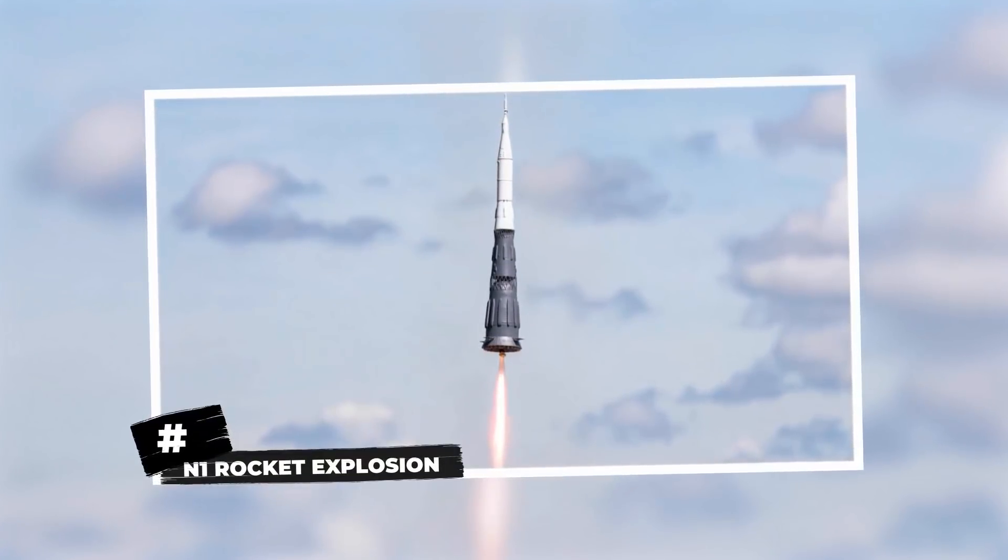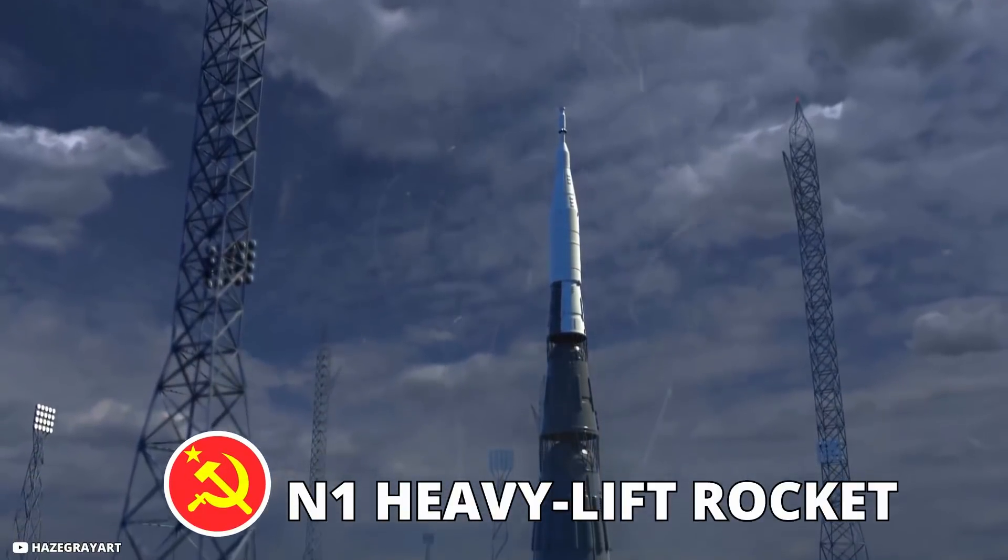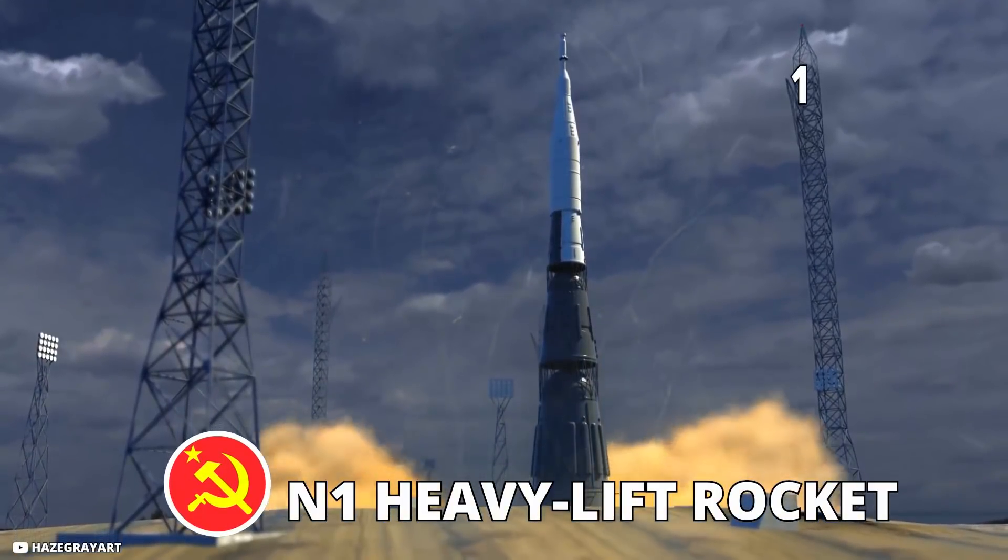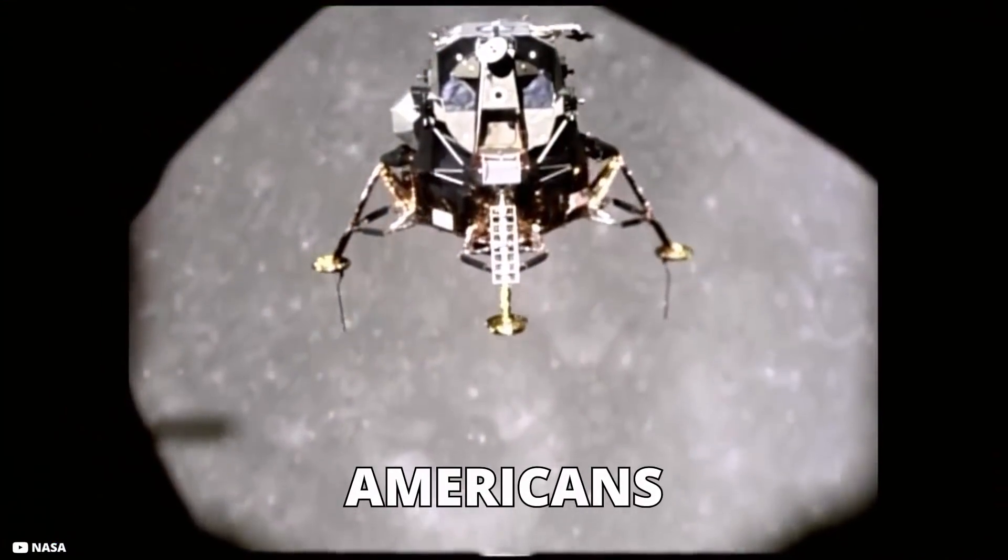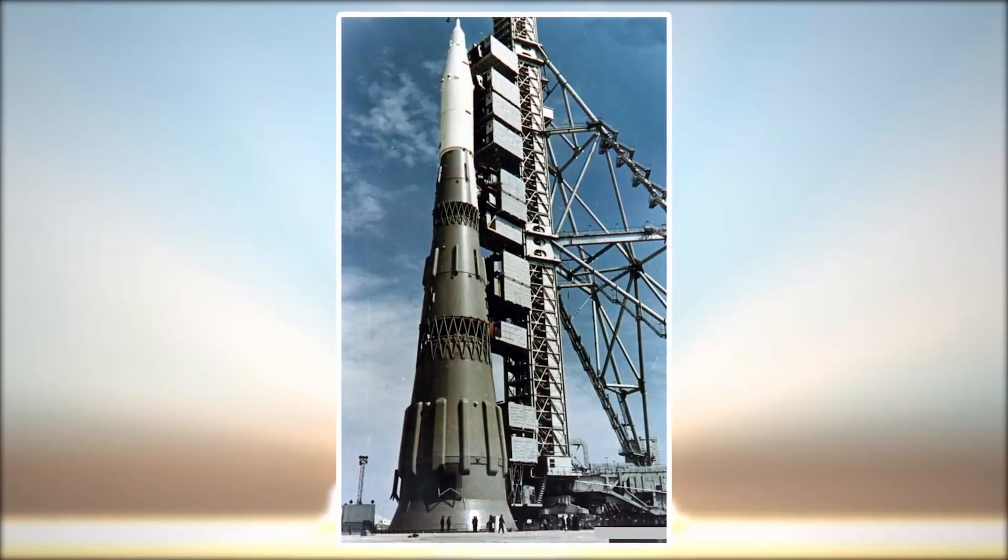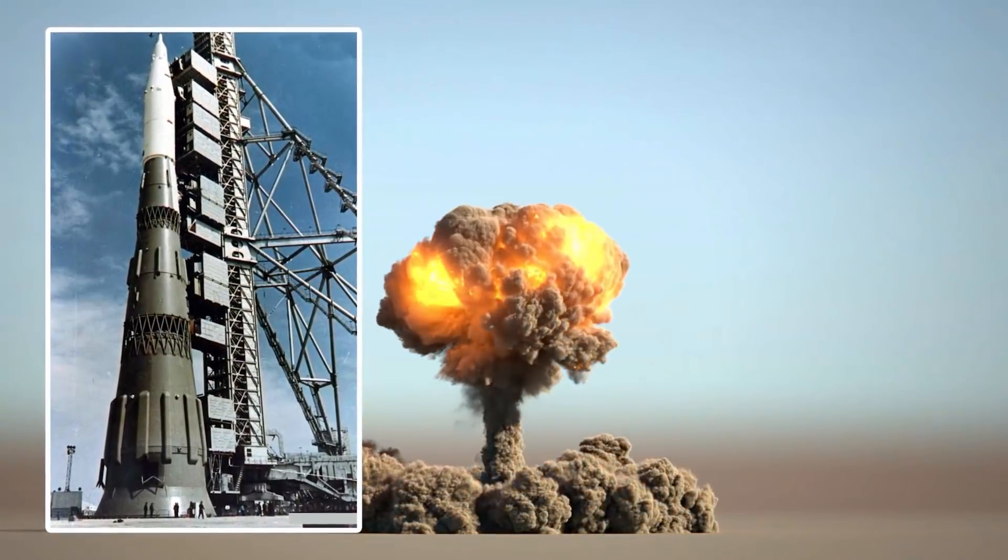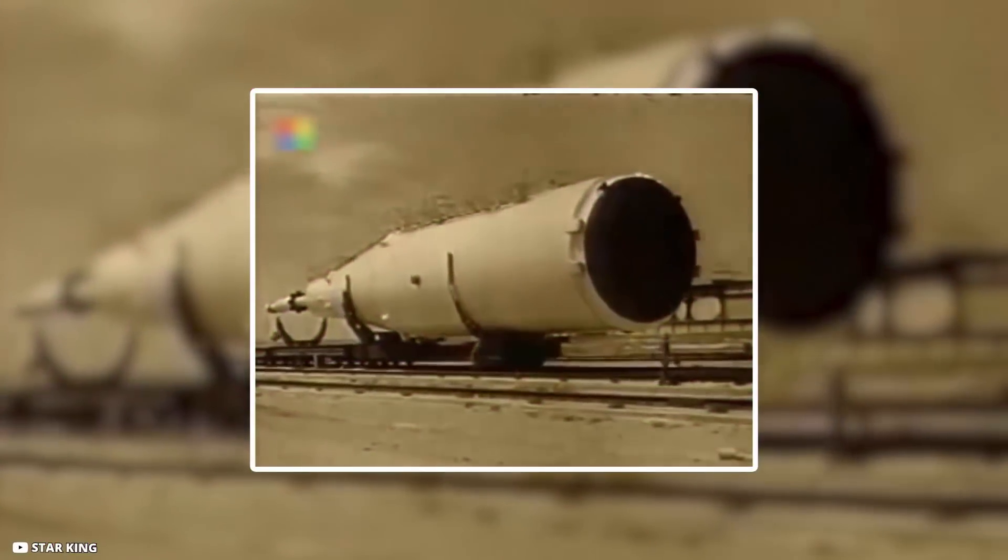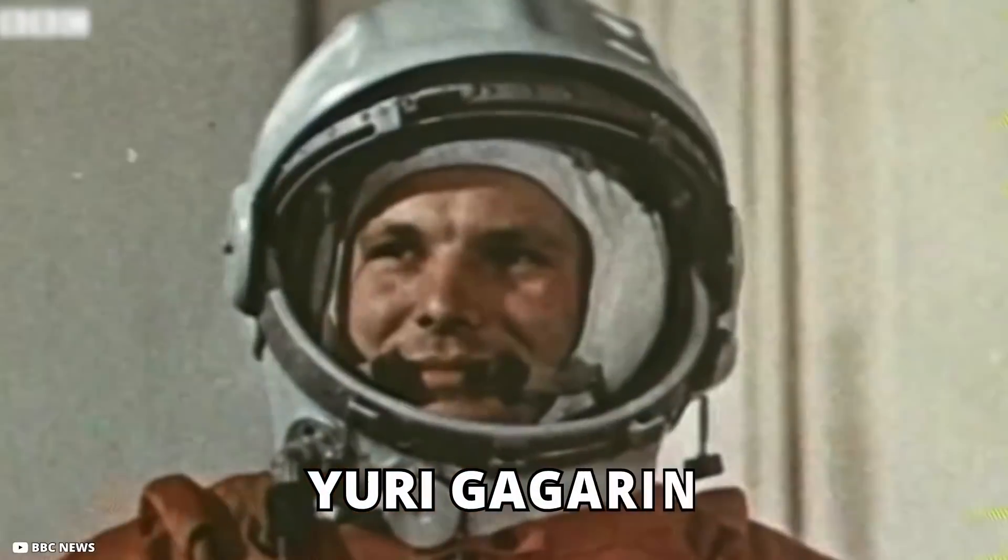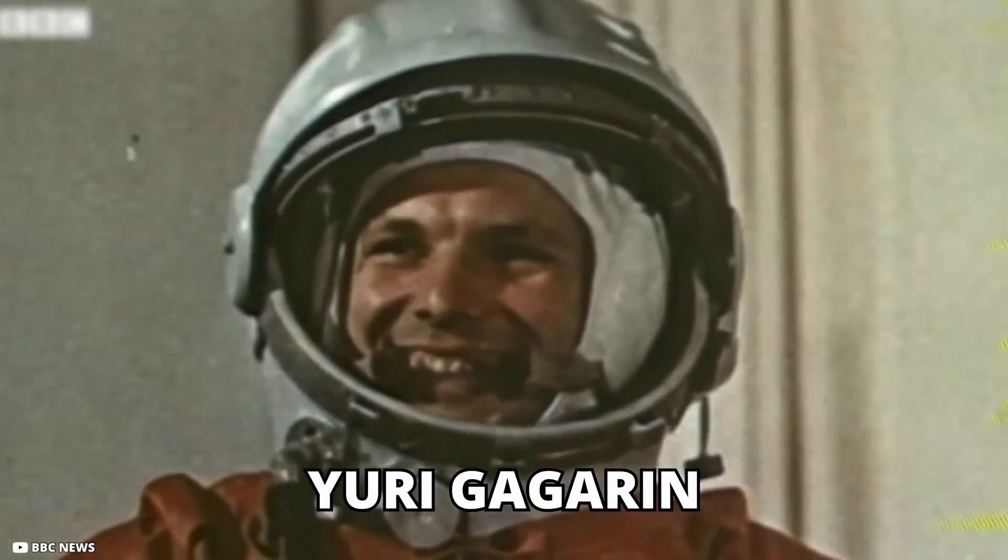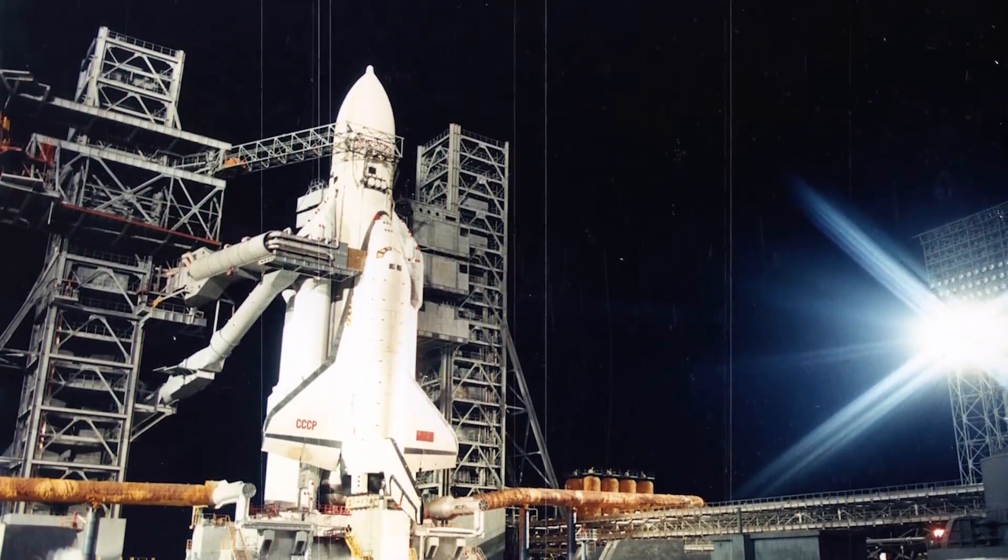N1 Rocket Explosion. The Soviet Union's N1 heavy lift rocket blasted off on its second launch attempt on July 3rd, 1969, 17 days before the Americans landed on the moon. However, a loose bolt set off a chain of events that ended in the world's largest non-nuclear man-made explosion. The N1 program was originally studied in 1959, two years before Yuri Gagarin became the first man to go into space, during a time when the Soviet space program had an advantage over the Americans.